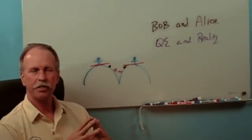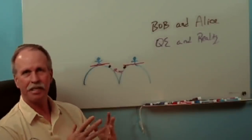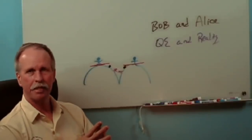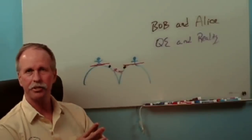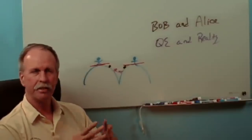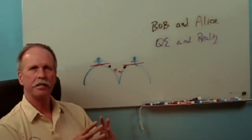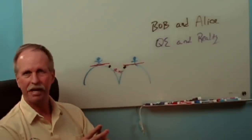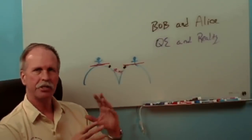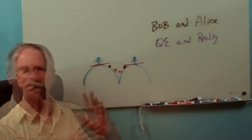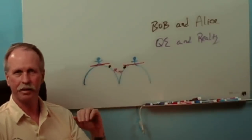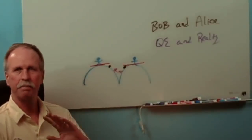Hi everyone, greetings from Northern Michigan. This is Bob the Science Guy. The other day I had the pleasure of going on Ball Busters with Quantum Eraser and his crowd of groupies to talk about sextants. I thought I would get a pretty good video about that, and you saw that on Monday. But I actually got a twofer — I also got to talk about the Bob and Alice paradox that Quantum Eraser and company has been pushing so much.